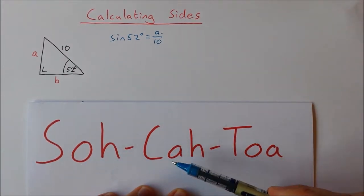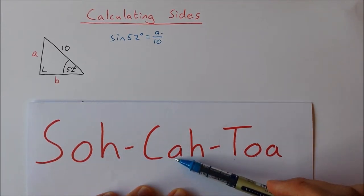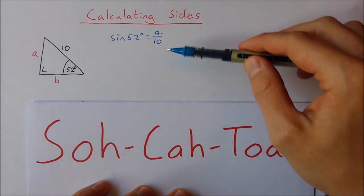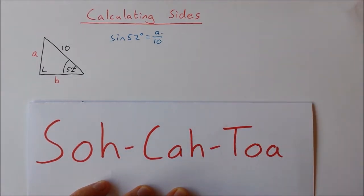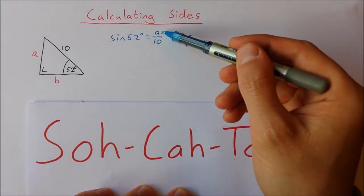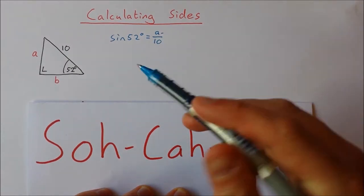If it's the opposite or adjacent, you're going to use sine, cosine, or tan. If it's the hypotenuse, unfortunately it's going to be on the bottom and we'll see that in the last example. Now to calculate 'a', I have sin(52°) = a/10.